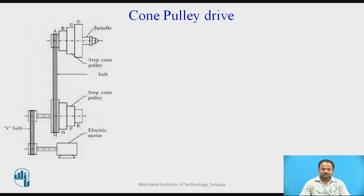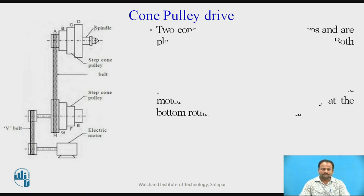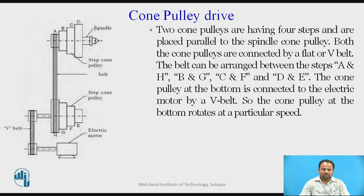This is the speedcone pulley drive. In this particular schematic sketch, you can see two cone pulleys having four steps each, placed parallel to the spindle cone pulley. Both cone pulleys are connected by a flat or V-belt. The belt can be arranged between the steps A and H, B and G, C and F, and D and E.